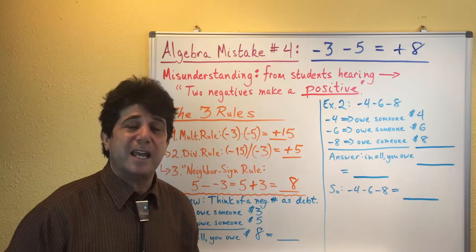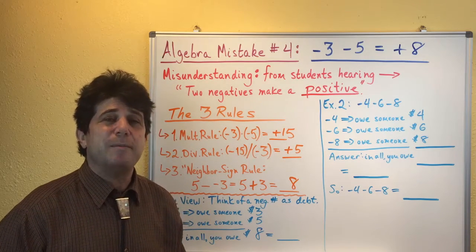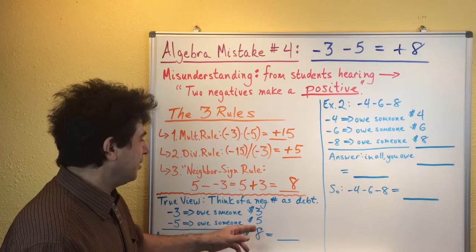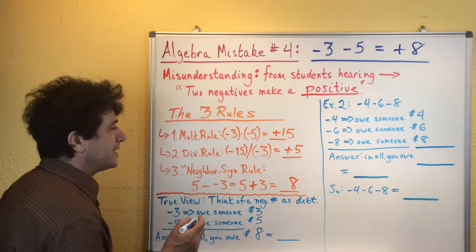So all you have to do to get the answer is say, how much do we owe all together? So you say all together in all you owe eight dollars. Three plus five is eight. And since a debt is negative,